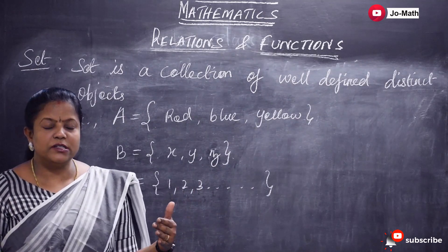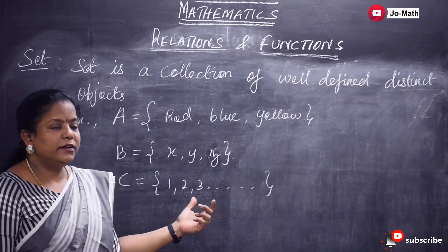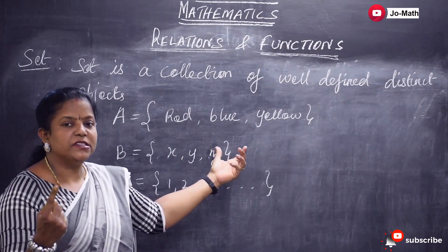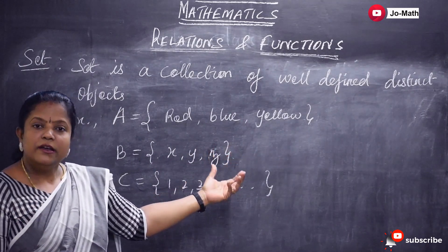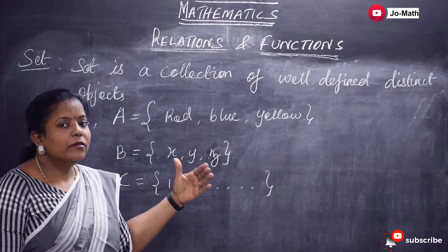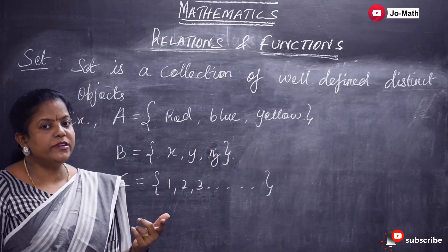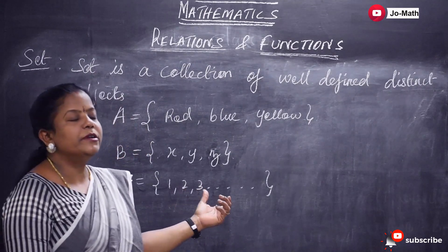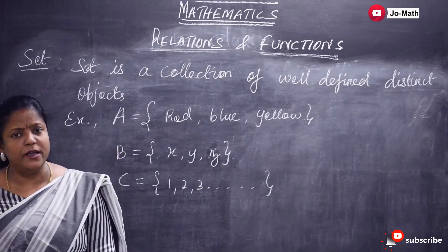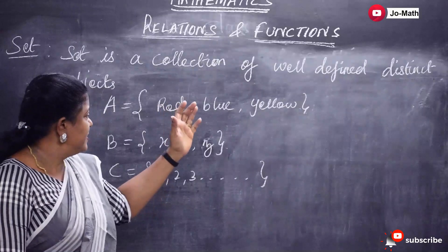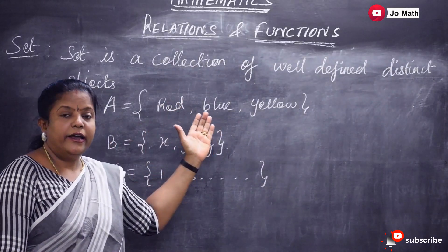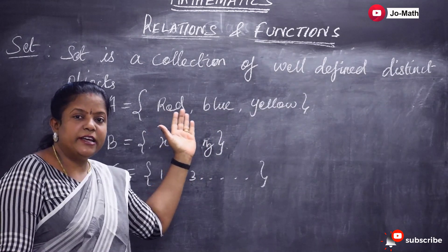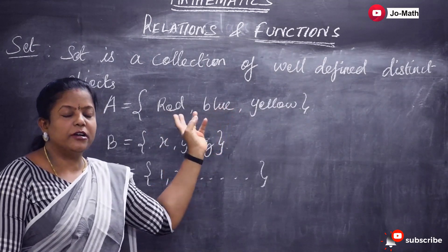And then the next one is singleton set. A singleton set is nothing but a set that has only one element — a single element. Then empty set. An empty set is nothing but a set that has no elements; the number of elements in the set is zero. For example, if you take set A talking about colors, here in set A we are having three colors.